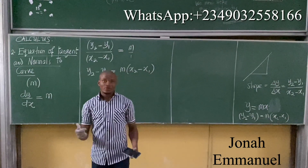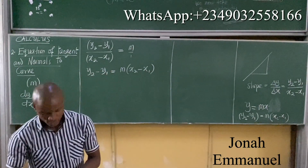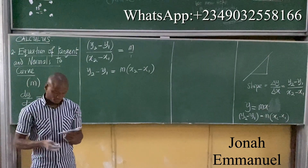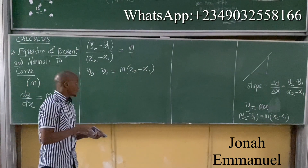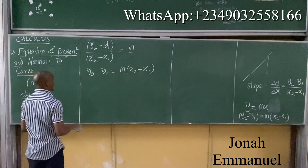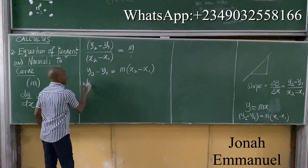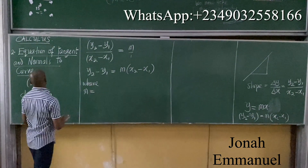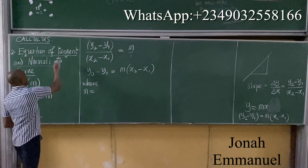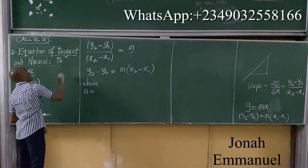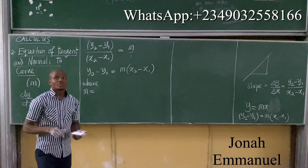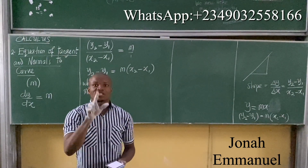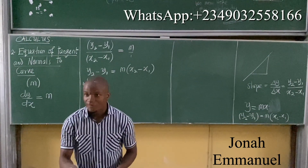We are assuming there is no intercept for now. So it becomes this. Where M is equal to the slope, or gradient, of the tangent.